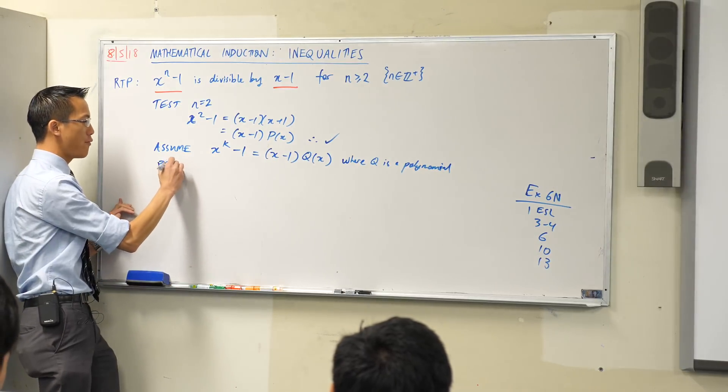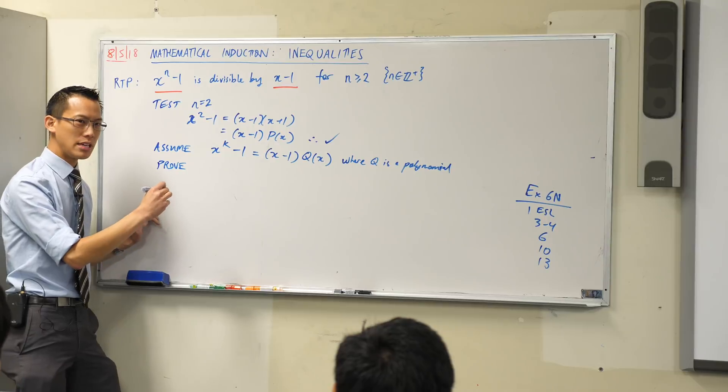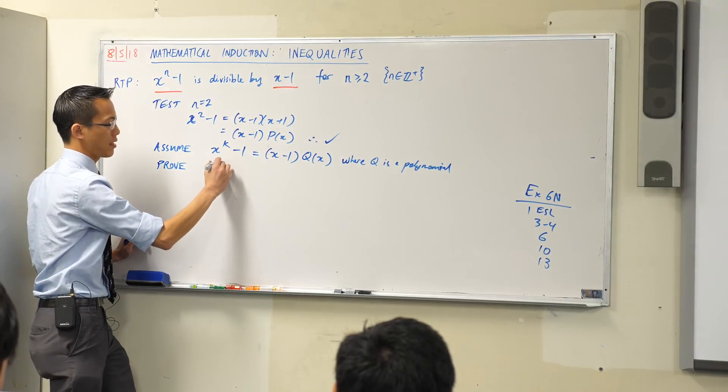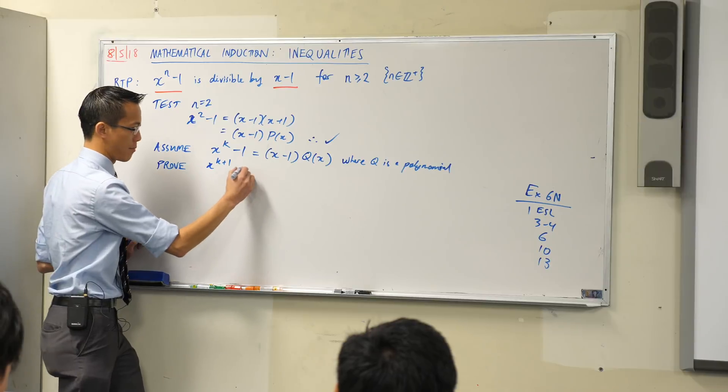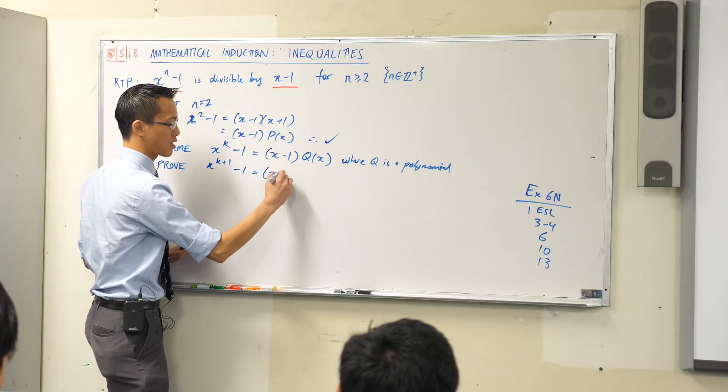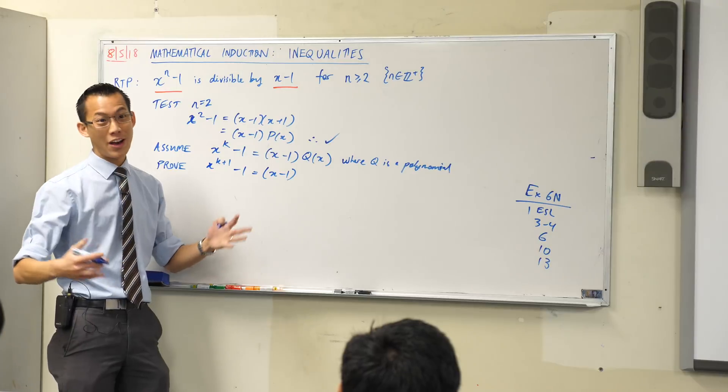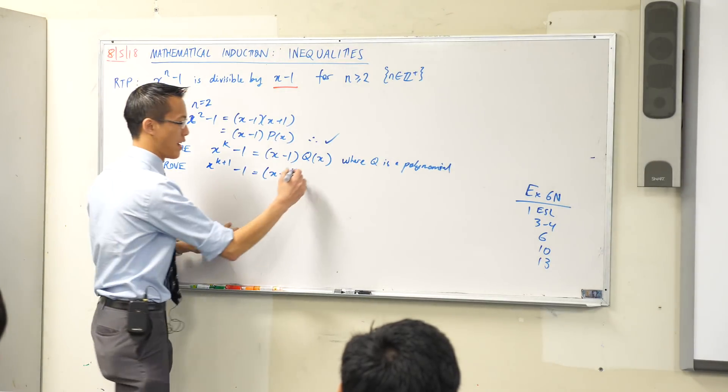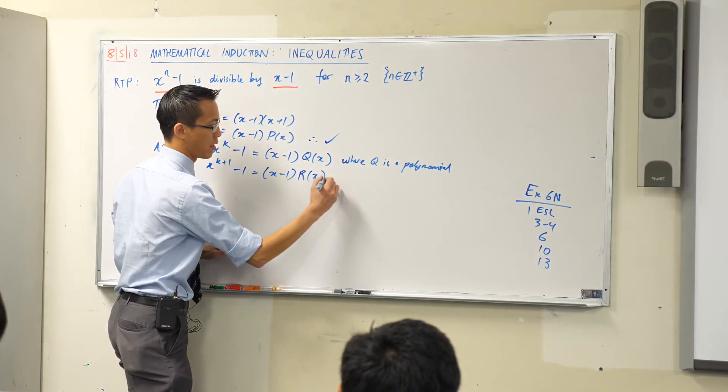Now I'm going to jump on this line that I just wrote here. If x to the k minus 1 really is divisible by x minus 1 I should be able to write it in the same form as what I had before. Namely x minus 1 times some other polynomial. I'm going to call this one q. So this is my assumption where q is a polynomial. I suppose I should write that.